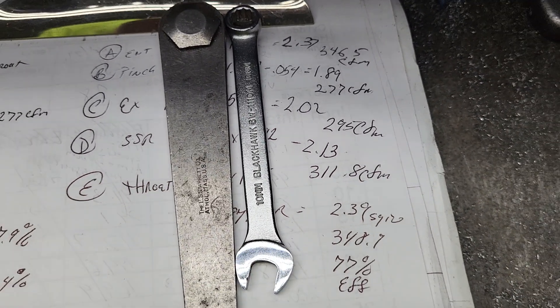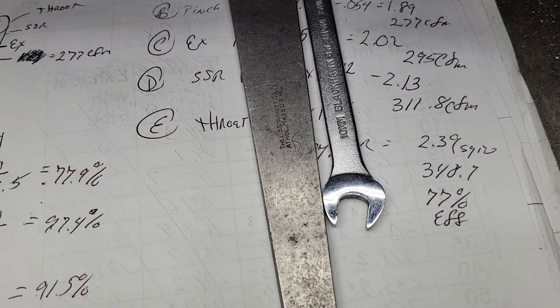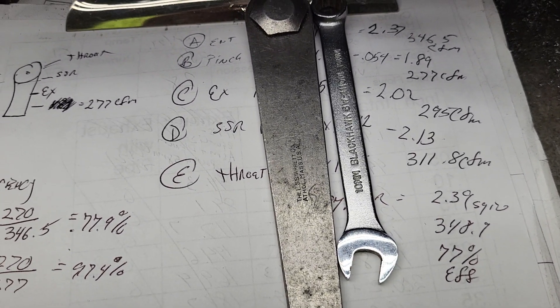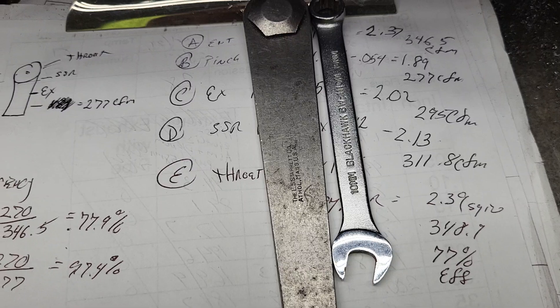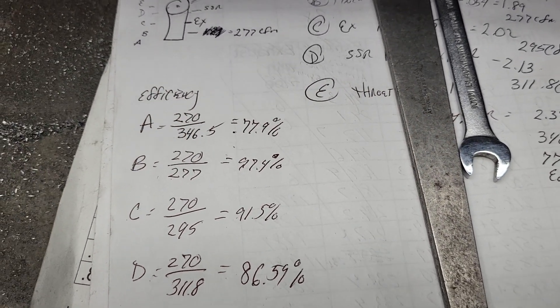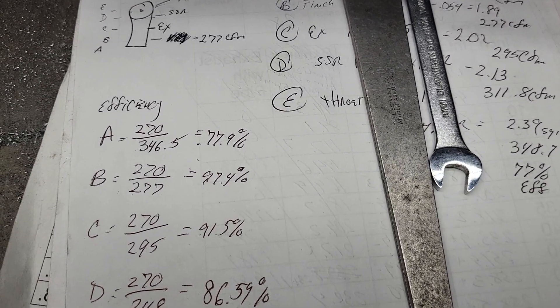Okay, so then I did my areas and we got all of our CFMs of what they could flow at 28 inches of water on the flow bench, right? That's the 146. You take the area times 146, it should give you about what it flows.